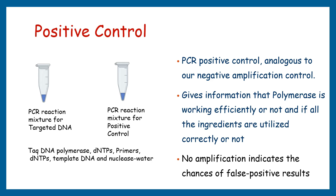The PCR positive control is analogous to the negative amplification control and provides information on whether the polymerase is working efficiently and whether all the ingredients are being utilized correctly. No amplification in the positive control indicates chances of false positive results. To set up a positive control, a parallel reaction tube is prepared including Taq DNA polymerase, dNTPs, primers, template DNA, and nuclease-free water.